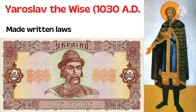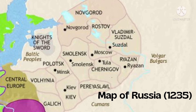Yaroslav the Wise, around 1030 AD. He made written laws, encouraged artists, and made alliances with other states. He divided the country up among his children when he died.